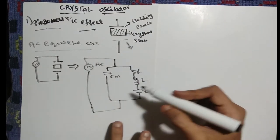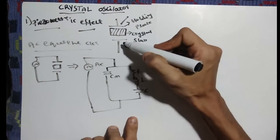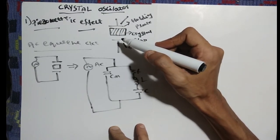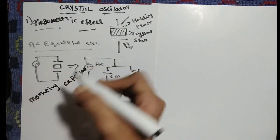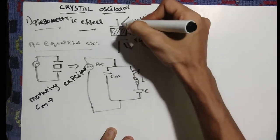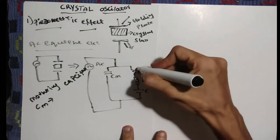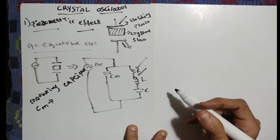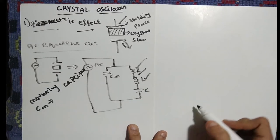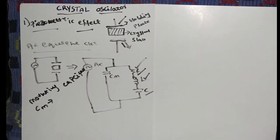The capacitance Cm exists due to the two metal plates with the crystal slab acting as a dielectric between them — this is called mounting capacitance. Additionally, when the crystal is vibrating, there are internal friction losses denoted as resistance R. The mass of the crystal, which represents inertia, is represented by inductance L. The stiffness of the crystal during vibration is represented by capacitor C.